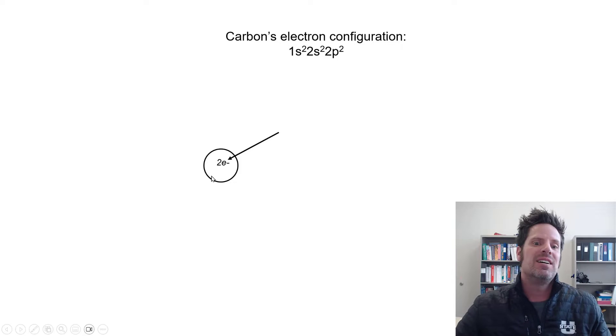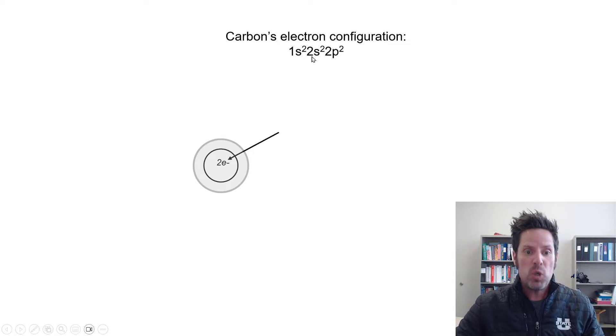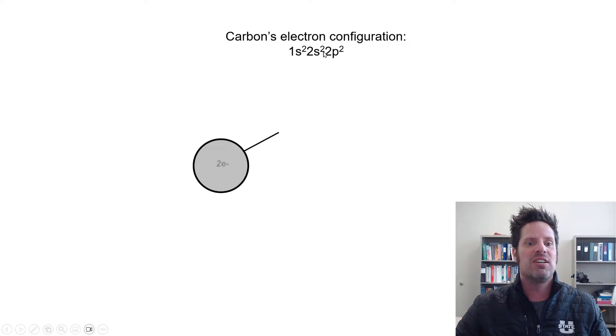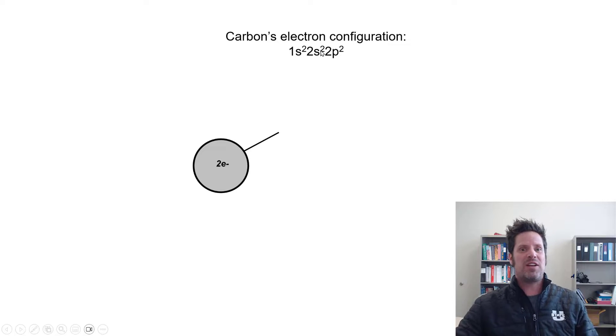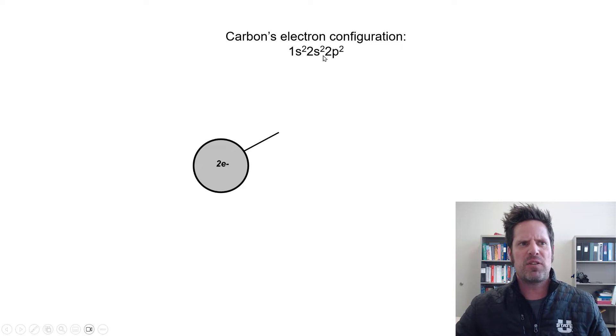Going a little bit further out, surrounding this 1s orbital and its two electrons is a larger 2s orbital that also contains two electrons, indicated by this 2s² part of our configuration. What do we have after that?